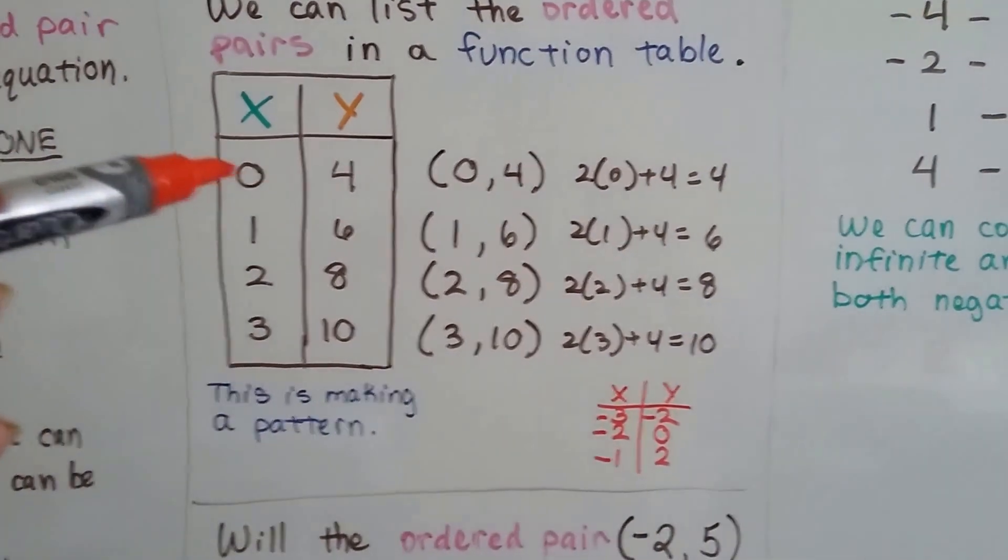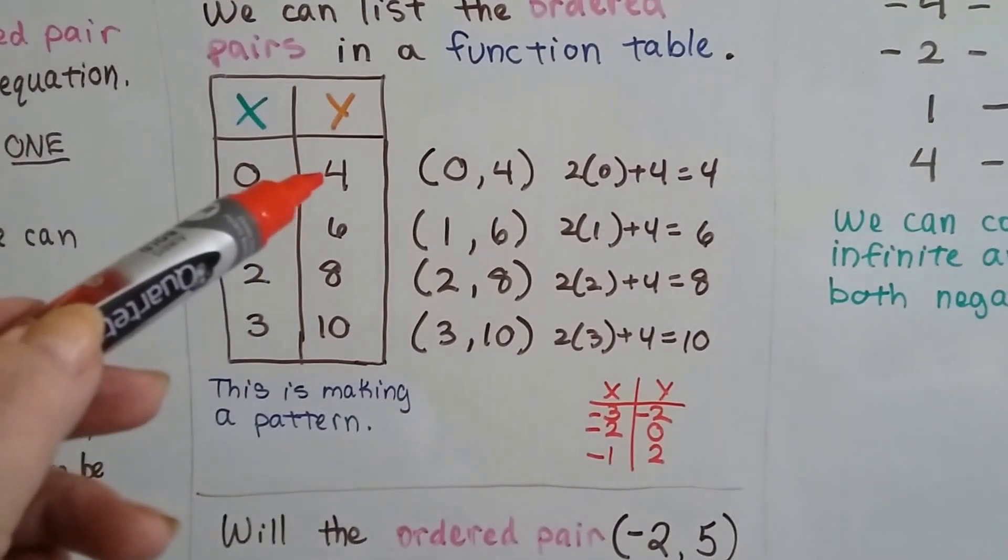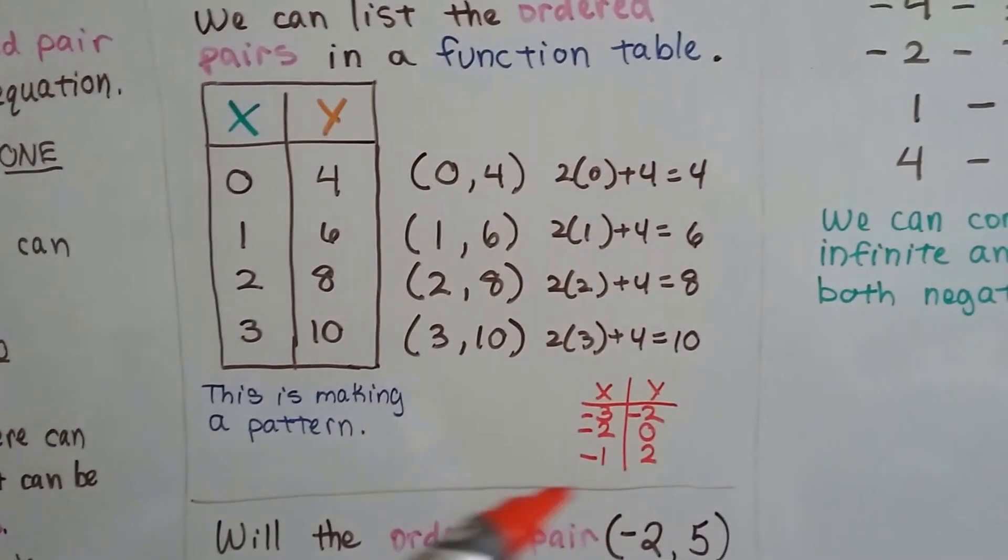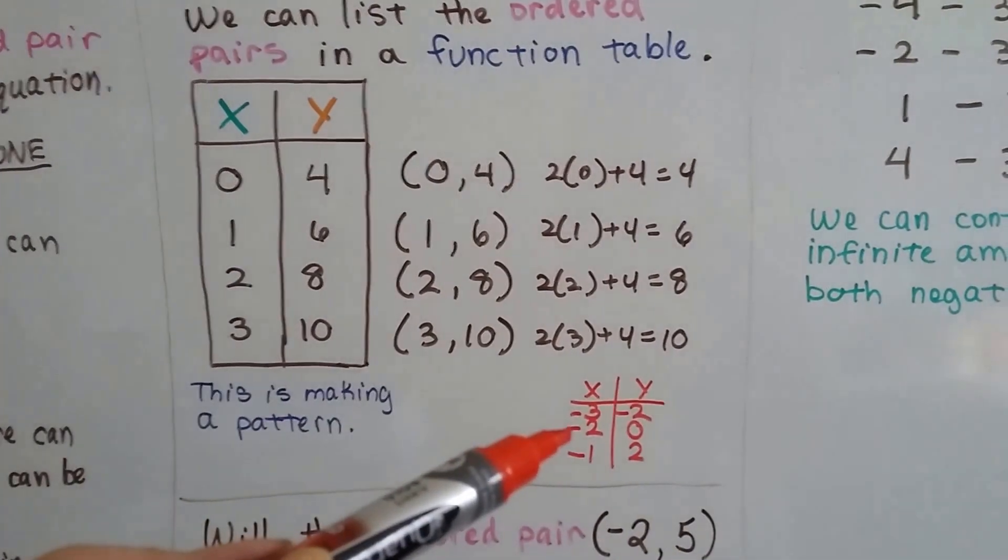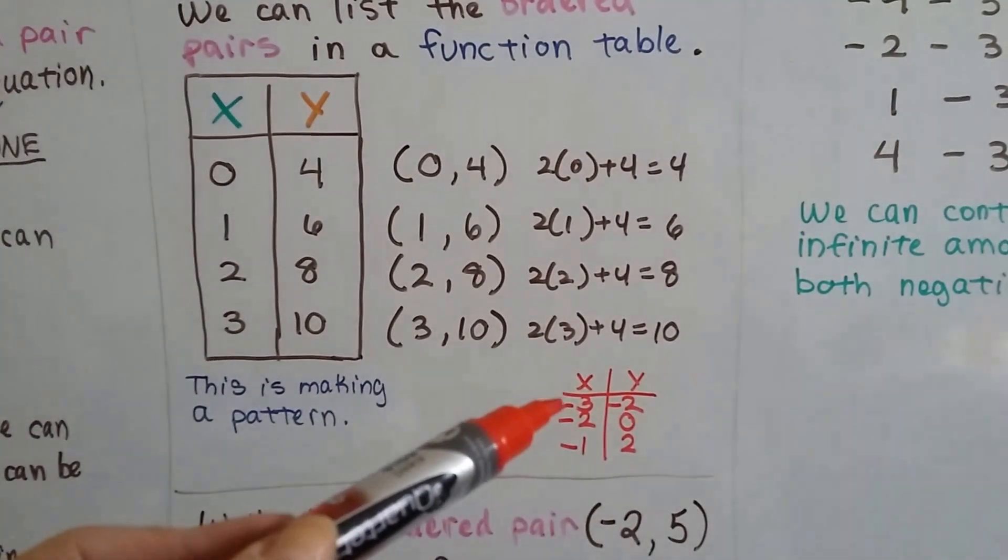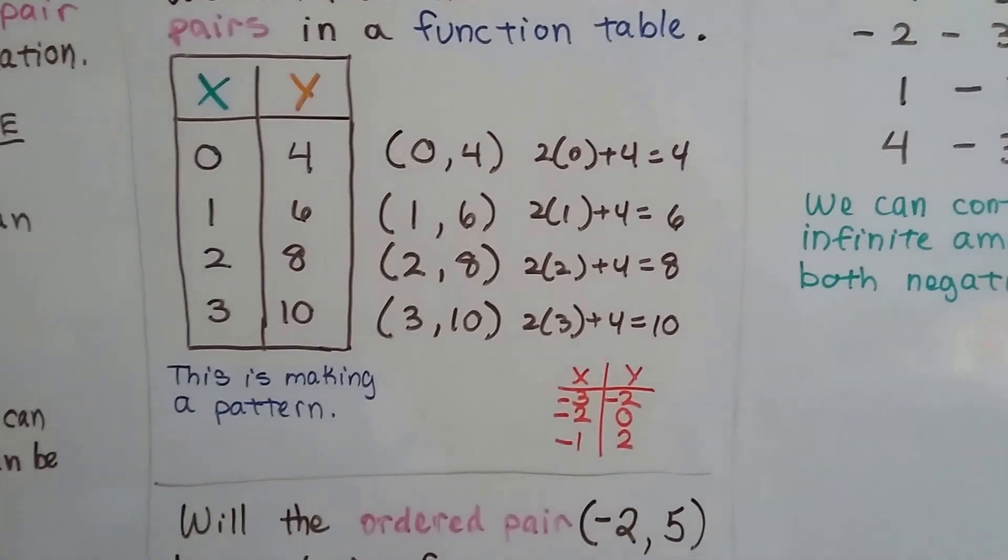If we go 1 less than 0, that's a negative 1. Then this y value will be 2 less, so 2 less than 4 is 2. So we'd have a negative 1 and a positive 2. If we went down one more from negative 1 to negative 2, that would make the y value a 0. And if we went down one more to negative 3, that would make the y value a negative 2. It's still going down by 2.